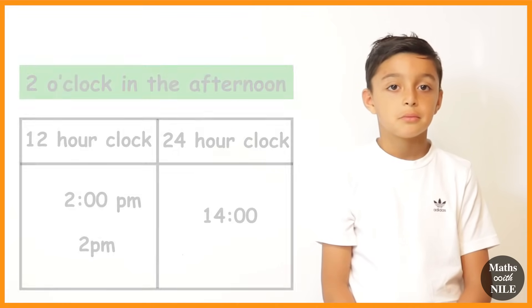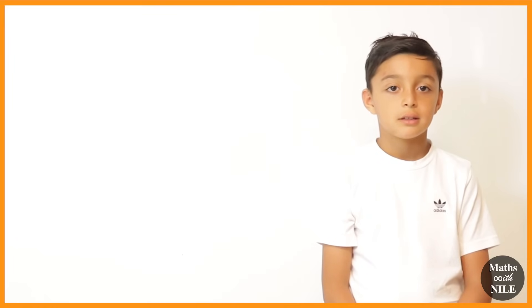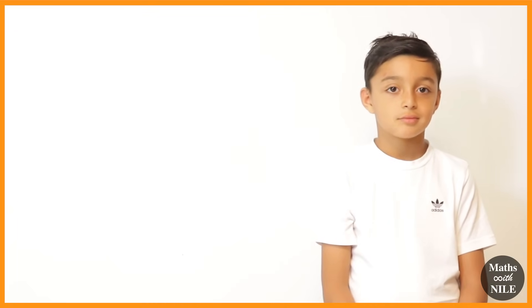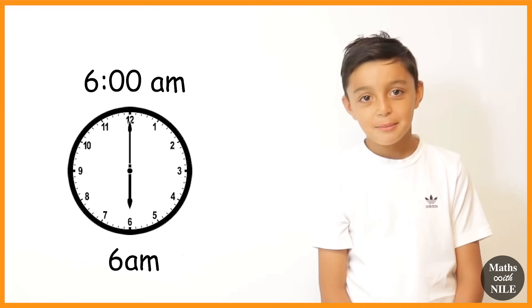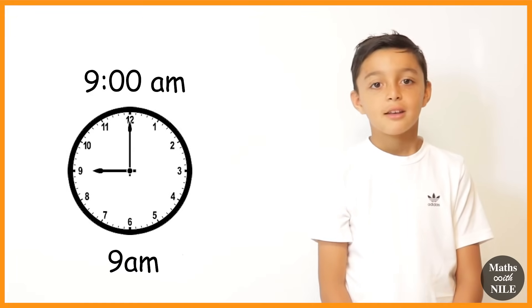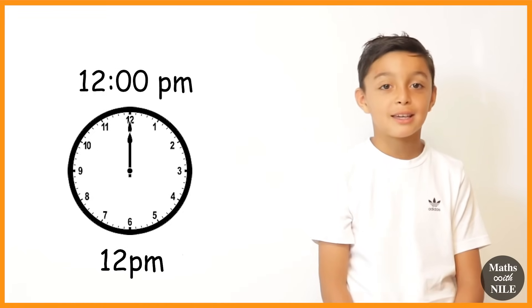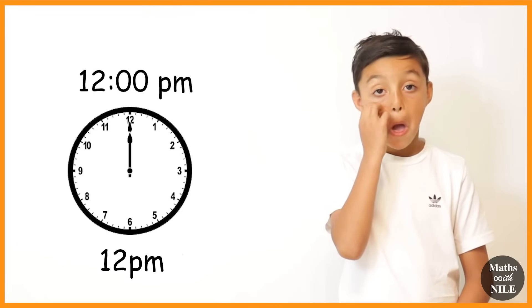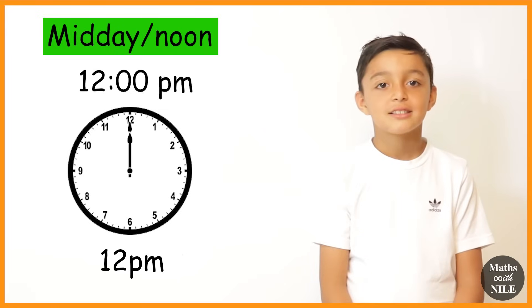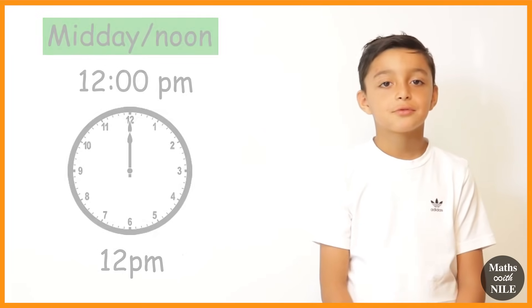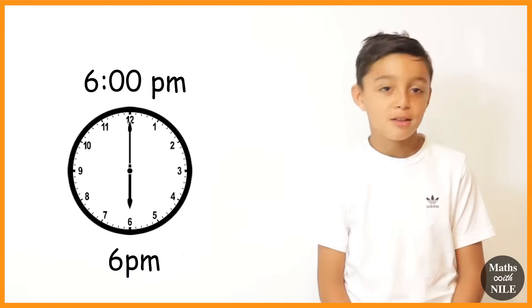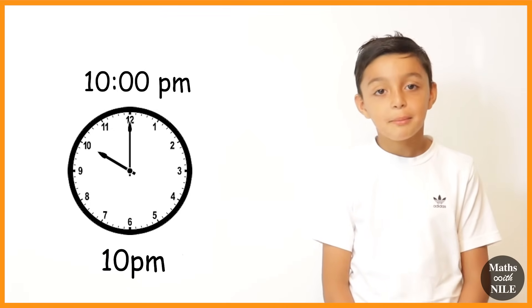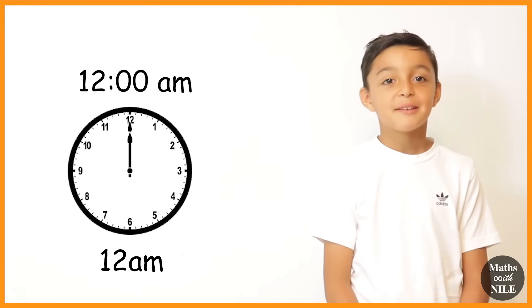So let's have a look how it works. Can you go through the times from 1 o'clock in the morning on a 12-hour clock? So it starts at 1 a.m., 2 a.m., 3 a.m., 4 a.m., 5 a.m., 6 a.m., 7 a.m., 8 a.m., 9 a.m., 10 a.m., 11 a.m., 12 a.m. And what happens at 12 p.m.? What time of the day is that? It's the afternoon. That's midday and that's when the afternoon starts. So after 12 p.m. it goes to 1 p.m., 2 p.m., 3 p.m., 4 p.m., 5 p.m., 6 p.m., 7 p.m., 8 p.m., 9 p.m., 10 p.m., 11 p.m., 12 a.m.